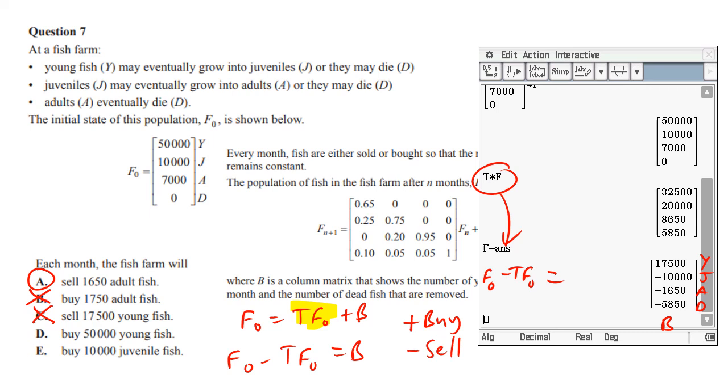Let's look at D: buy 50,000 young fish. So we're looking for buy, which is plus, and we want 50,000 in the young fish. No, that's actually from up here, which is from F0, if you remember. So that one's just trying to fool you by giving you a value that's true for F0, but not for B. We're looking at B after all. And the last one is buy 10,000 juvenile fish. Again, that's a value from F0. Here for the juvenile fish, it's minus, which is sell. So they're trying to check you about your buying and your selling, which one's positive or negative.